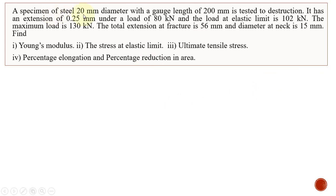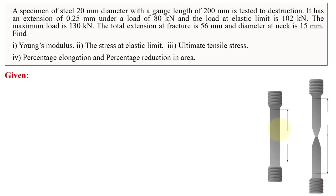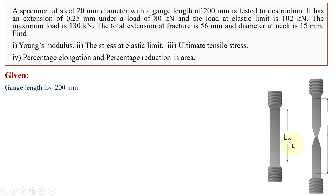A specimen of steel 20 mm diameter with a gauge length of 200 mm is tested to destruction. We are going to test this specimen using a universal testing machine (UTM) under a tensile test. The gauge length is the length subjected to tension during testing — the remaining length is under clamping and should not be considered. Only the length subjected to tension is taken as the gauge length.